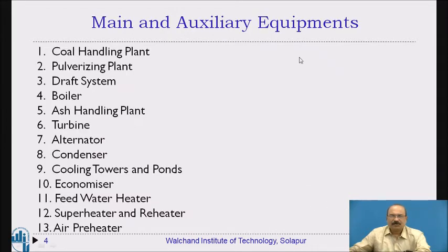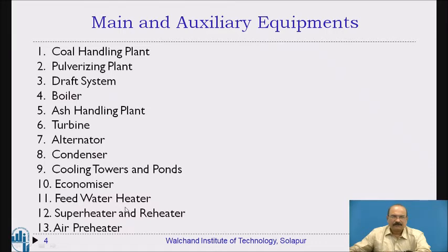The main and auxiliary equipment includes coal handling plant, pulverization of coal plant, draft system, boiler, ash handling plant, turbine, alternator, condenser, cooling tower, ponds, economizer, feed water heater, super heater, reheater, and air preheater. These are all the auxiliary units used in thermal power stations.